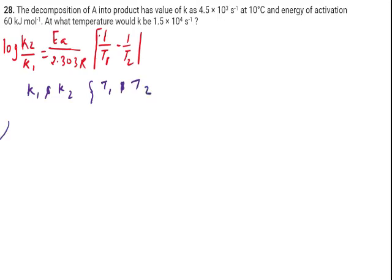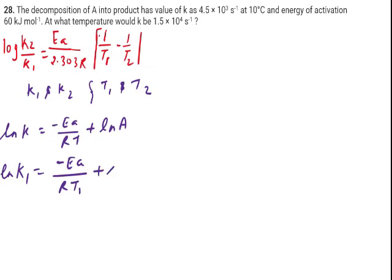We know this equation already: lnK equals to minus Ea over RT plus lnA. This is the Arrhenius equation. So I am going to take lnK as K1: minus Ea over R, temperature as T1, plus lnA. This is going to be equation number one.